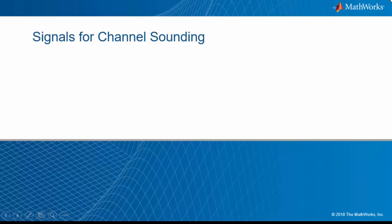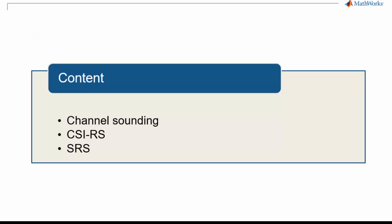This is a new episode of our series 5G Explained. In this video, we discuss signals that are available in 5G NR to support channel sounding and channel estimation. First, we will define channel sounding. Then we will look at Channel State Information Reference Signals, or CSI-RS, which support channel sounding on the downlink, and Sounding Reference Signals, or SRS, which are the equivalent on the uplink.